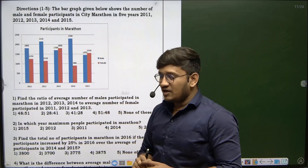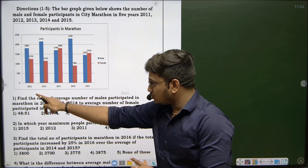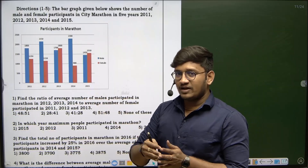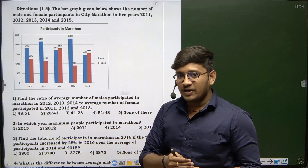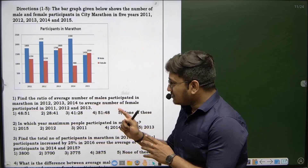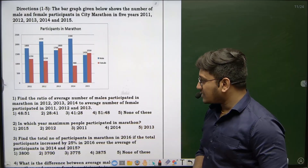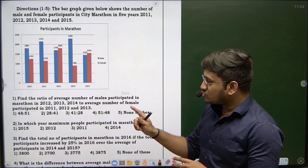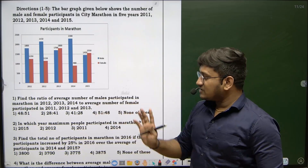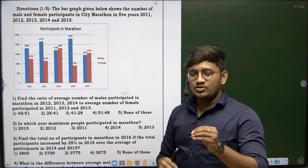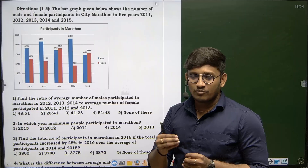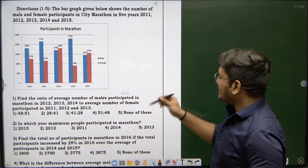Now let's try to analyze the first question. We have data from 2011 to 2015 over 5 years. The question asks: find the ratio of average number of male participants in the marathon in 2012, 2013, 2014 to average number of females participated in 2011, 2012 and 2013. The key concept here is average = sum of observations divided by number of observations.